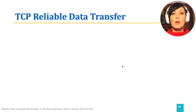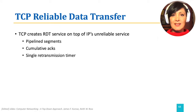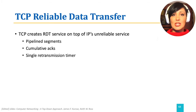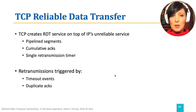TCP provides pipelining. It employs cumulative ACKs and maintains only one retransmission timer. Retransmissions are either triggered by timeout of the single timer or by duplicate ACKs received at the sender side.